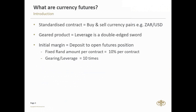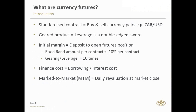Talking about initial margins: you put down roughly 10%, which means you're borrowing the other 90%, so there is a finance cost involved — this is priced into the futures contract. Mark-to-market is another very important term: it's a daily revaluation of each open position by the exchange — the JSE — at the close of each business day. It's a safety mechanism to protect you as a client, as well as PSG, against adverse price movements. You'll see an example when we look at the cash flow table.